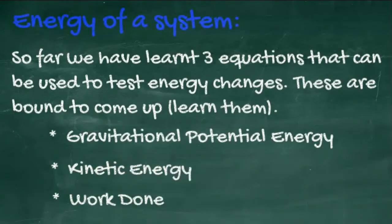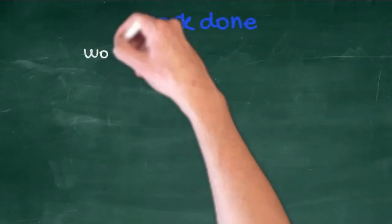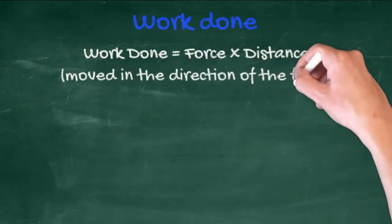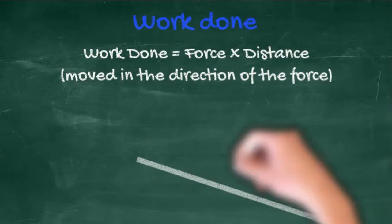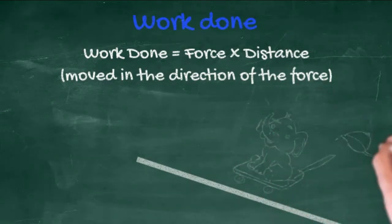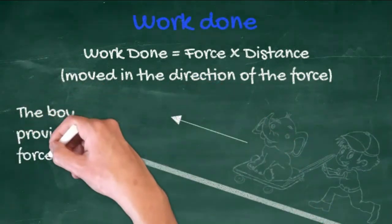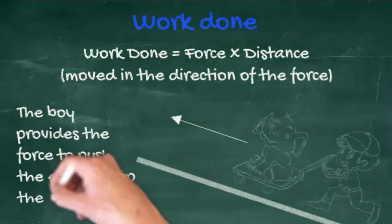The last of these three equations is the one for work done. Work done equals force times distance. Just remember that it's the distance travelled in the direction of the force. So in this instance, how far the elephant travels up the ramp, not the gain in height.